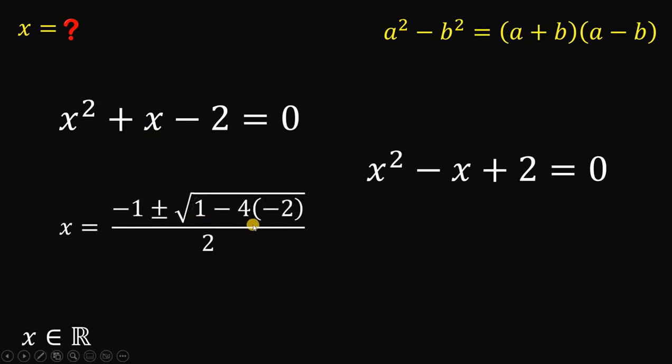And, the constant term is the value of c which is negative 2. Now, let's simplify. 1 minus 4 times negative 2. This is just 1 plus 8 or simply equal to 9. Now, square root of 9 is definitely equal to 3. So, we have two possible solutions here. We have negative 1 plus 3 over 2. Or, negative 1 minus 3 all over 2.